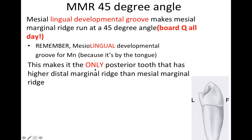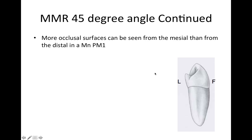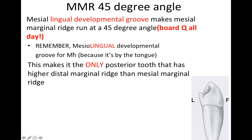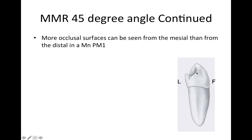This makes it the only posterior tooth that has a higher distal marginal ridge than the mesial marginal ridge. One way they can test you on this is: there's more occlusal surface visible from the mesial than from the distal, because the mesial marginal ridge sits lower due to that 45-degree angle.